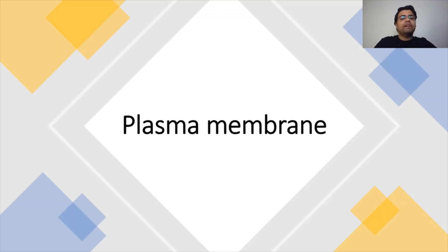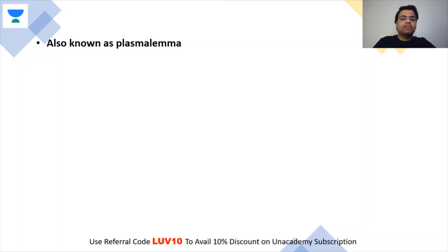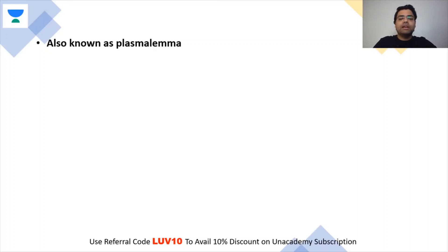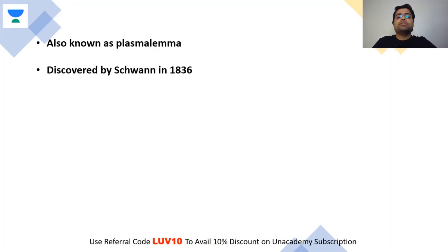On this basis, we will divide the topic like previous cell organelles. For plasma membrane, we will cover some history and some facts which are important as questions. Plasma membrane is also called plasmalemma — plasmalemma refers to the same thing as plasma membrane. It was discovered by Schwann in 1836.